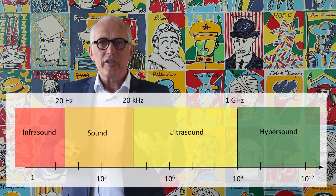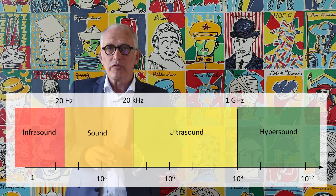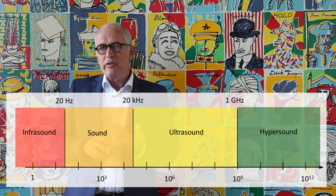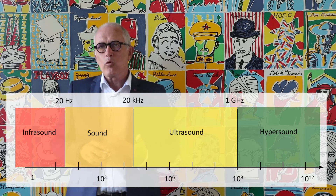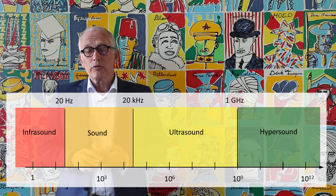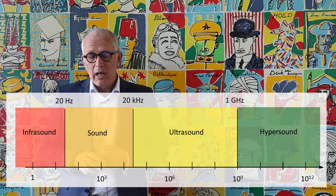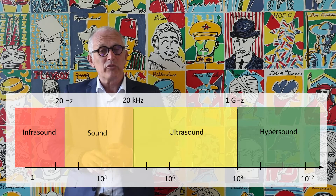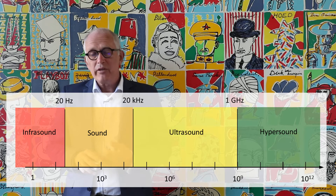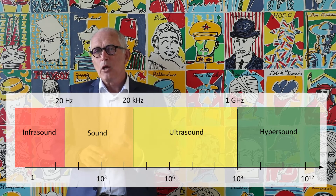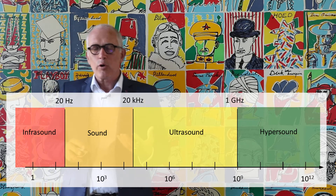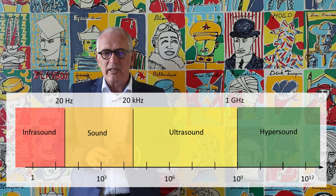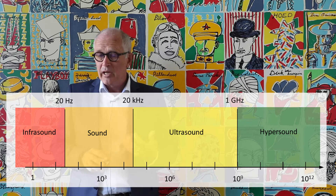Another important distinction in acoustics is based on the frequency range of the sound waves. Traditionally, we divide the entire frequency range of acoustic phenomena into four ranges. We first have sounds — the sounds that humans are able to hear. We define sounds as all acoustic signals with frequency components between 20 Hz and 20,000 Hz, even though this range varies from subject to subject and changes with time.